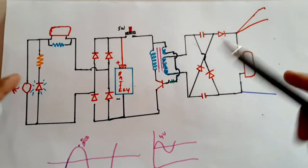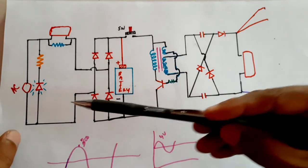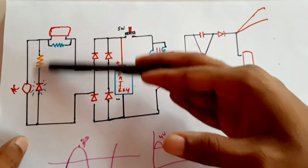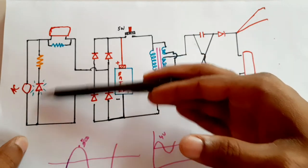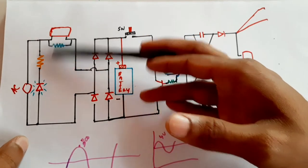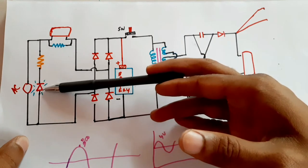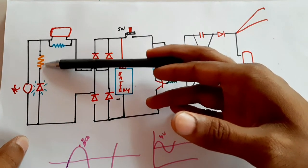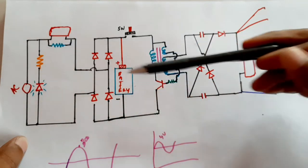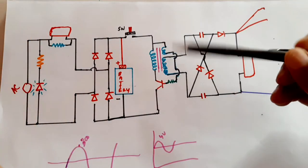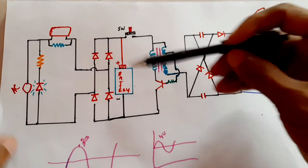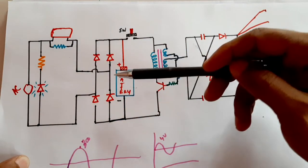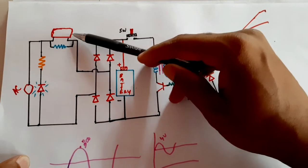Now we will check the circuit diagram. The AC is coming in at 230 volts. There is an LED — if we say that this LED operates at 3 volts, the remaining voltage will be dropped across this element. Similarly, we have to charge the battery, so we are using a dropper circuit — a voltage dropper circuit — to charge this battery.